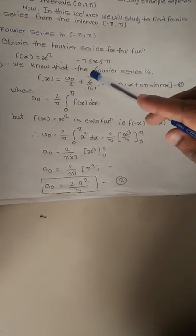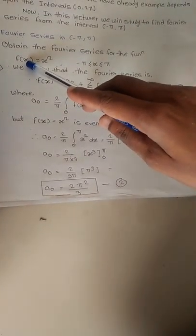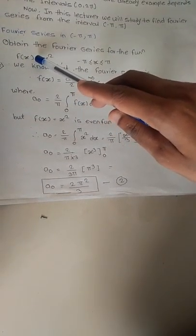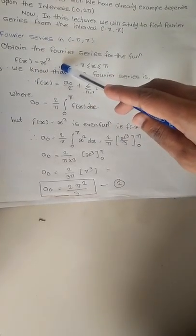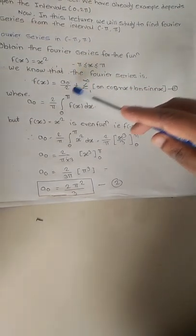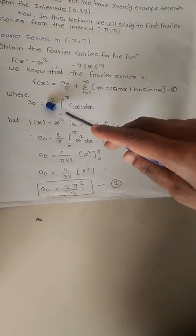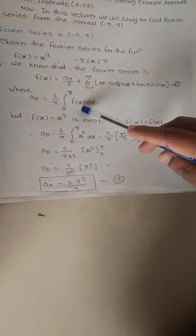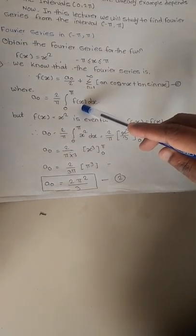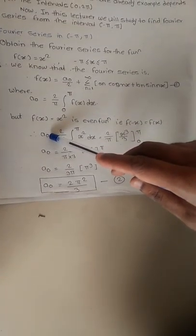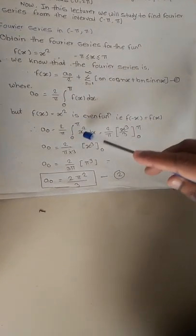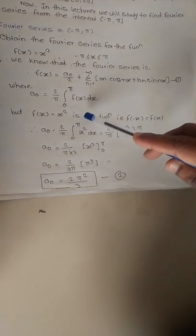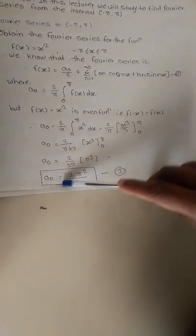Our main target is to find the Fourier coefficients a₀, aₙ, and bₙ. We will check whether this function is even or odd — substitute minus x in place of x. If f(minus x) equals f(x), the function is even. Since f(x) equals x square, it is an even function. So there is only a need to find the values of a₀ and aₙ. The value of a₀ is 2 by pi, integral 0 to pi of x square dx.